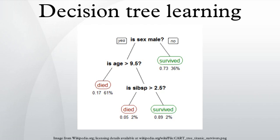Decision tree learning uses a decision tree as a predictive model which maps observations about an item to conclusions about the item's target value. It is one of the predictive modeling approaches used in statistics, data mining and machine learning.